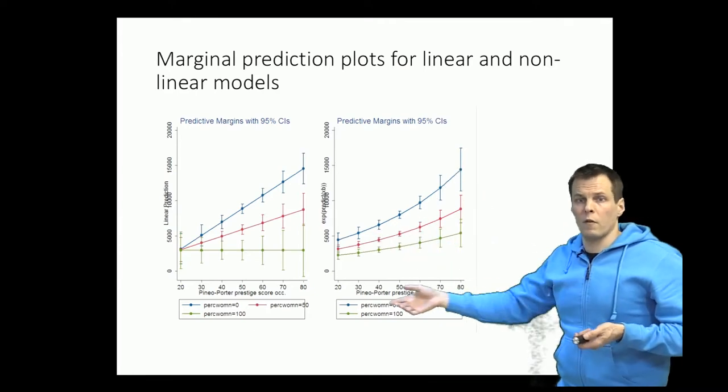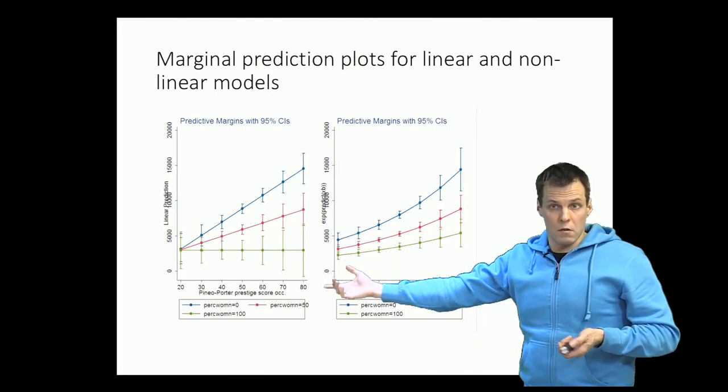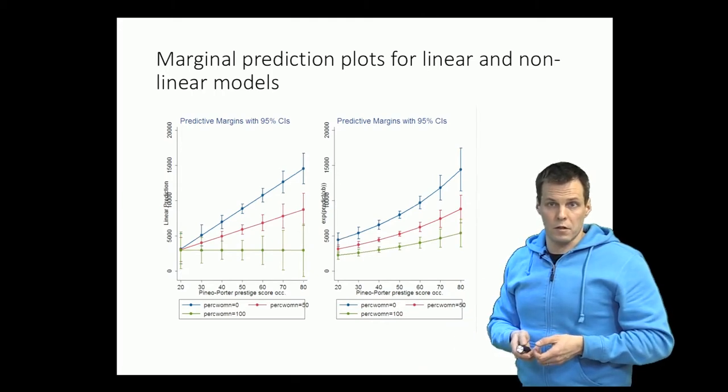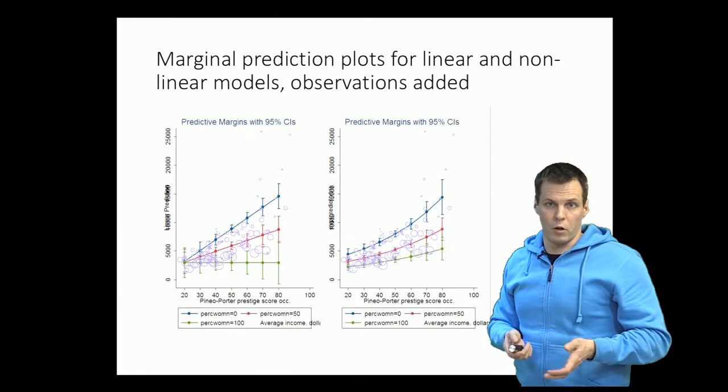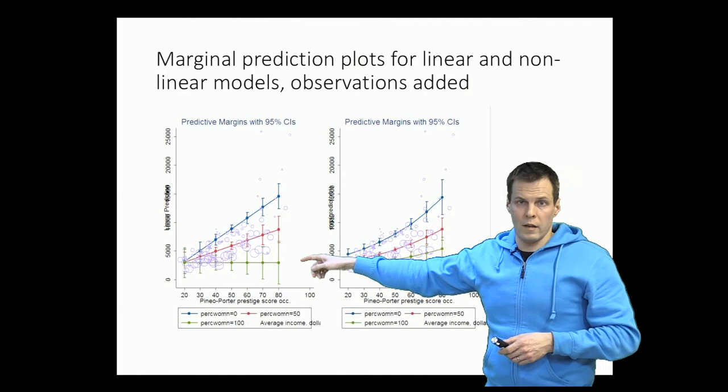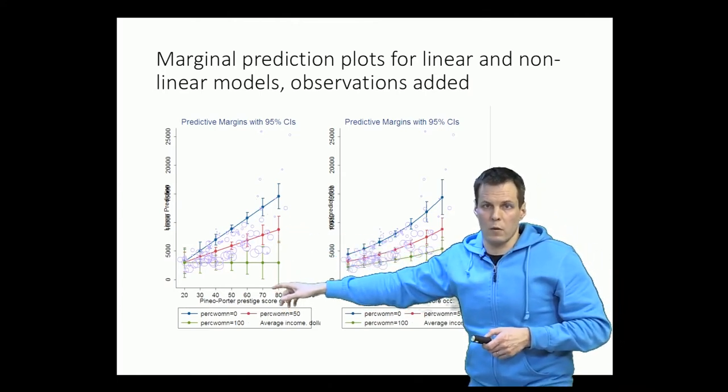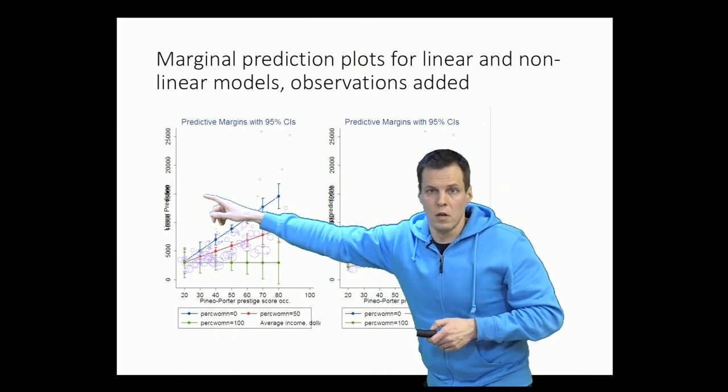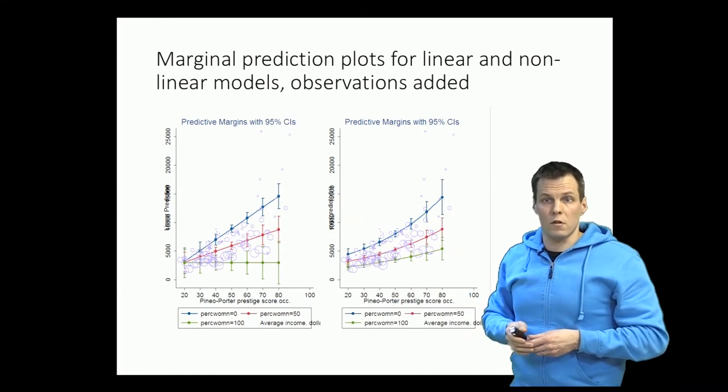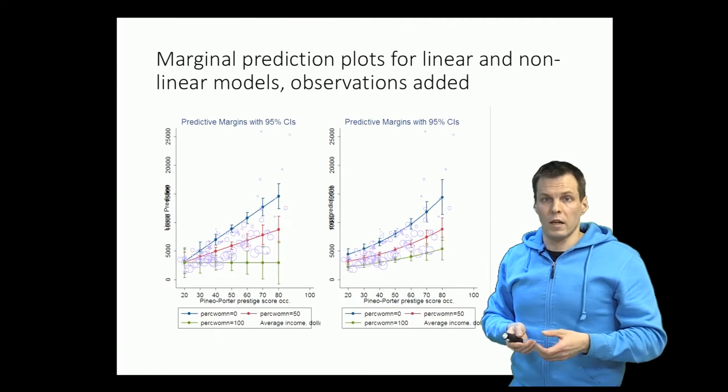How do we know which one of these lines fits the data best? We can do that by simply adding the observations to this plot. So we can have a plot like that, and each circle here is one profession. We have prestige for that profession and we have income for that profession. The size of the circle presents the number of women. The smallest circles are no women in that profession. The largest circles are all women in that profession.